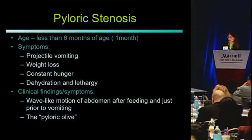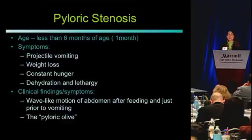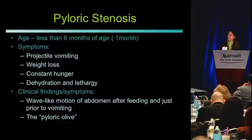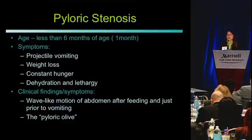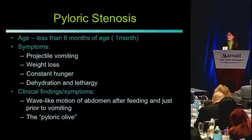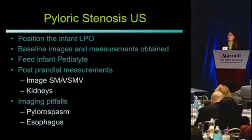Who do we see this in? Usually babies about a month old — a friend describes the Gerber baby as the pyloric stenosis baby. They have projectile vomiting, may be losing weight, acting hungry, dehydrated, and lethargic. Clinically, patients have usually had symptoms for a while before presenting with that wave-like motion of the anterior abdominal wall and a palpable abdominal mass. These days we can find it much more quickly with ultrasound.